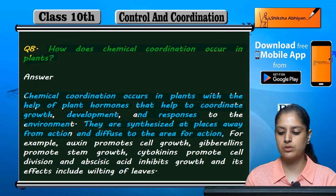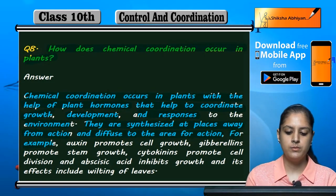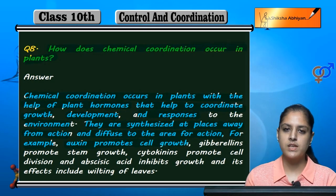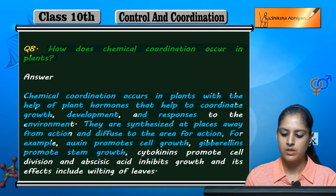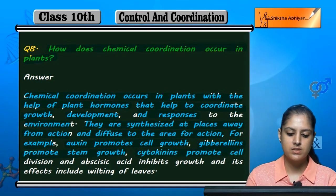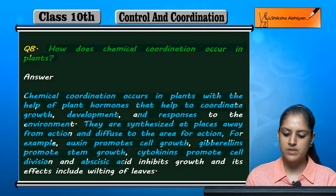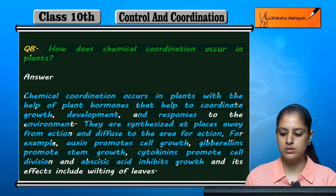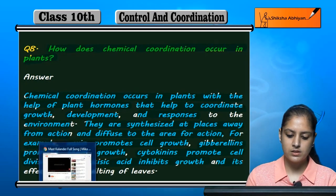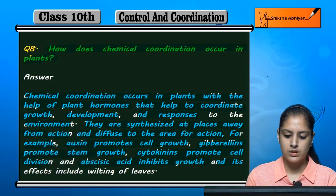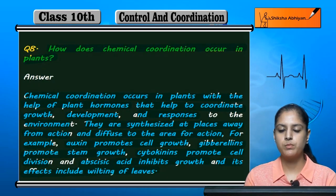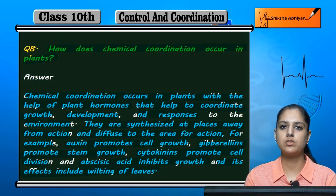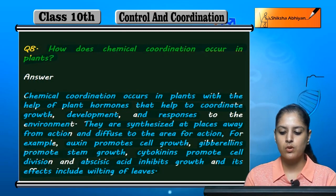For example, auxin promotes cell growth, gibberellins promote stem growth, cytokinins promote cell division, and abscisic acid inhibits growth. Its effects include the wilting of leaves. These are some plant hormones and their actions.